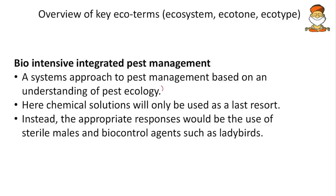First, the overview of key eco terms like ecosystem, ecotone, etc. UPSC doesn't ask all these terms but focuses on new or emerging terms. Here we discuss bio-intensive integrated pest management, or BI-IPM. It is a systems approach to pest management based on an understanding of pest ecology.